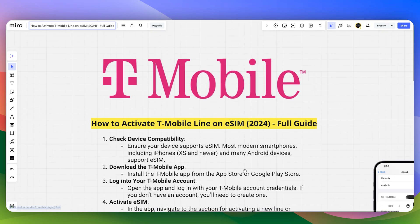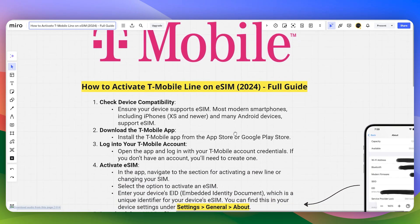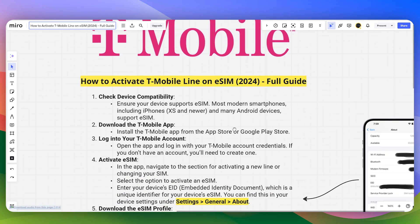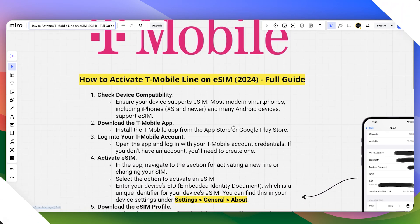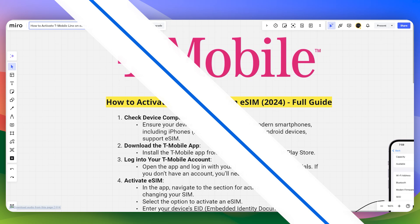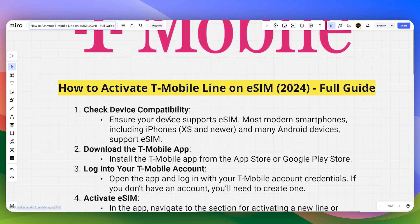In this video, I will guide you how you can activate a T-Mobile line on eSIM. The first and most important step is you need to check the device compatibility and ensure that your device supports eSIM.